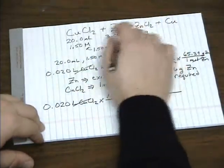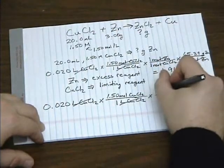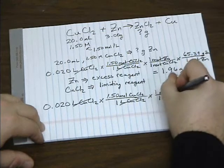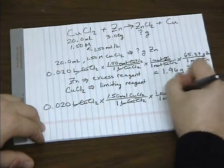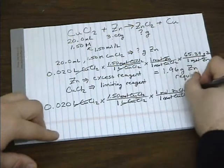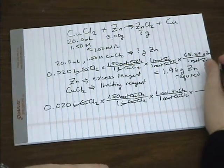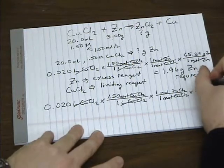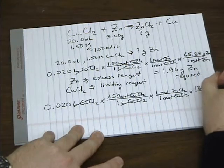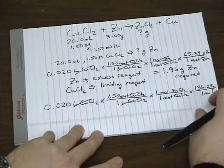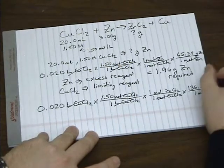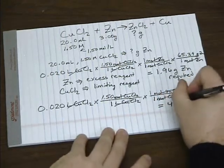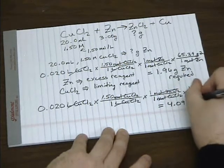It's a 1 to 1 ratio. It's 1 mole of zinc chloride for every 1 mole of copper chloride. And zinc chloride's molar mass is 136.29 grams per mole. Which gives us 4.09 grams.